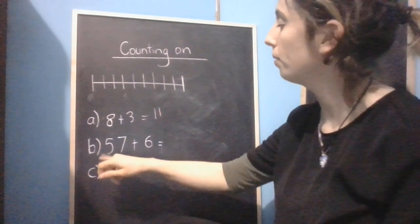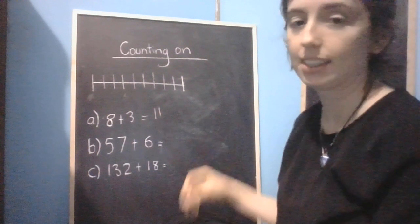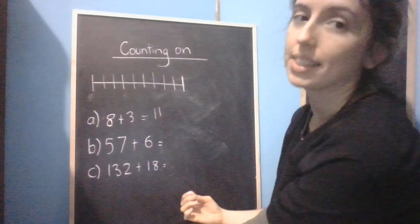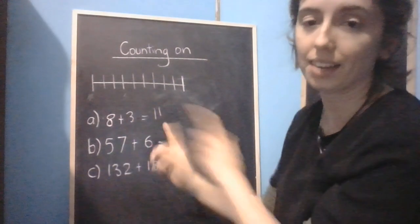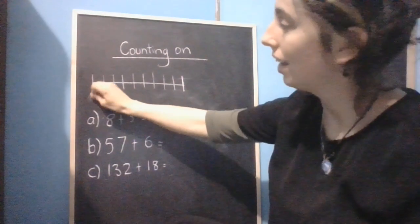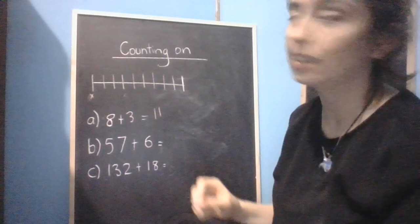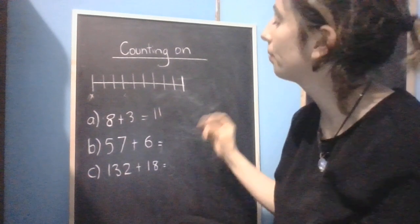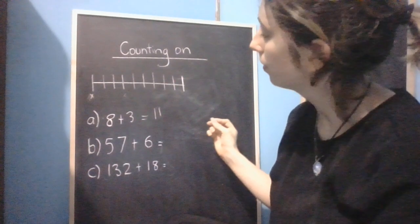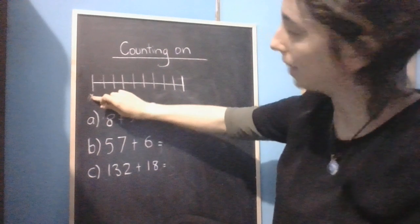Let's have a look at B. We've got 57 plus 6. So we always start with our biggest number. If they had been written the other way around, we would still start at the 57 and add on 6, because it's much easier to add a smaller number to a bigger number. Okay, so we start at 57 and we count on 6.